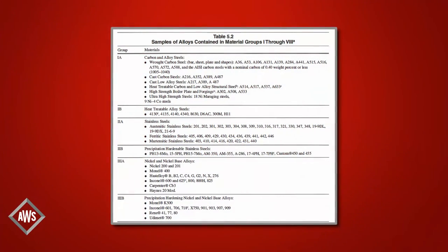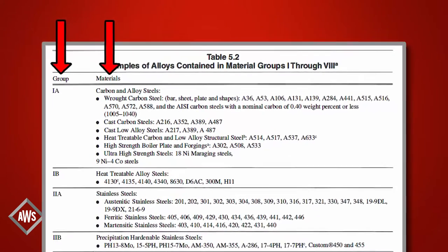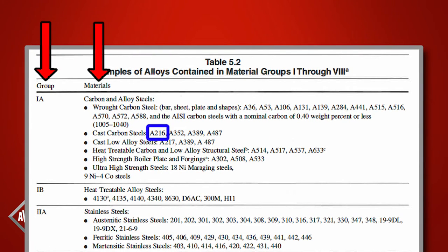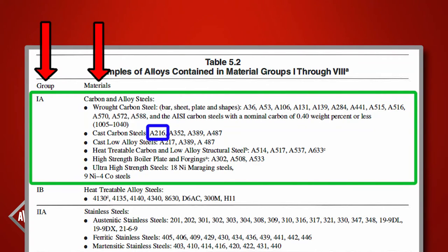5.3.2 covers base metals. Test welds made with one of the base metals listed in Table 5.2 only qualify as the base metal group that metal belongs to. Table 5.2 on pages 10 through 11 covers samples of alloys contained in material groups 1 through 8. The group designator is on the left-hand side of the table, followed by the materials that fall under that particular group. For example, if a welder is qualified to weld A216 cast carbon steel, he would also be qualified to weld all other materials in base metal group 1A.